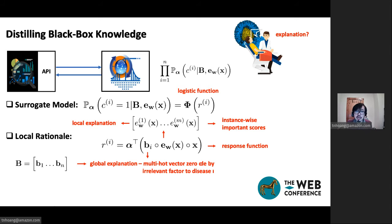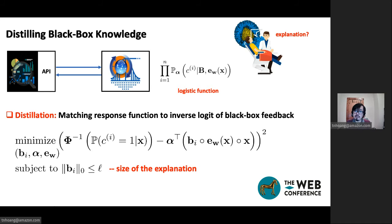So to learn this representation, we are matching its response function with the inverse logit of the black-box feedback. And this essentially boils down to a quadratic minimization task under a constraint that the sparsity of the global rationale is upper bounded by a predefined threshold. And this threshold is customized by the domain expert characterizing the cognitive limit of interpretability.